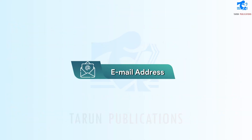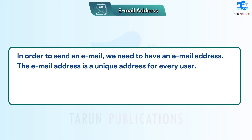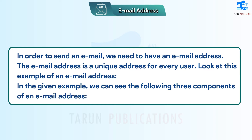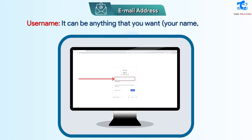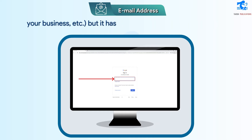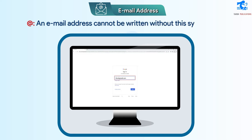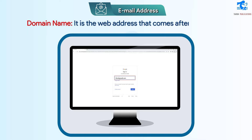Email Address. In order to send an email, we need to have an email address. The email address is a unique address for every user. An email address has three components: Username – it can be anything that you want, your name or name of your business, but it has to be unique. The @ symbol – an email address cannot be written without this symbol, it is pronounced as 'at'. Domain name – it is the web address that comes after the @ symbol.